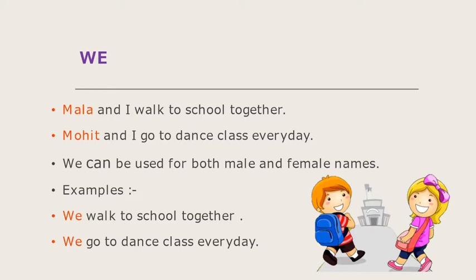We walk to school together. And in the next sentence, Mohit and I go to dance class every day — instead of Mohit and I, I am using 'we.' We go to dance class every day. So, we can say that the word 'we' can be used for both male and female naming words. We is used for plurals.